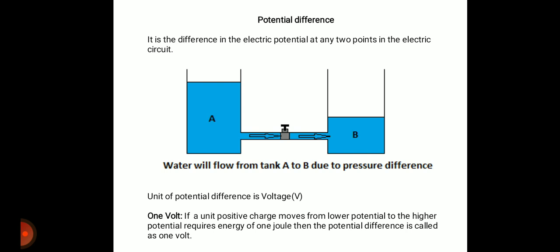If you want to move a unit positive charge from lower potential to higher potential and the energy required is 2 joules, then the potential difference is two volts. If the energy required is 3 joules, then the potential difference is three volts. So potential difference is the difference in electric potential at any two points in the electrical circuit, measured in volts.